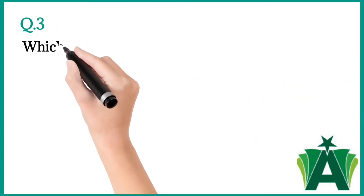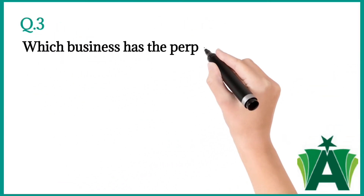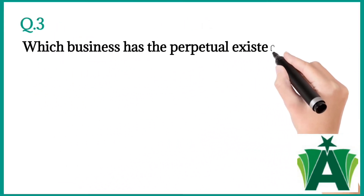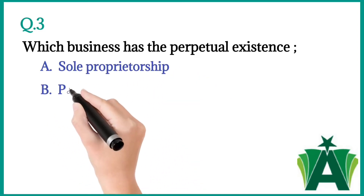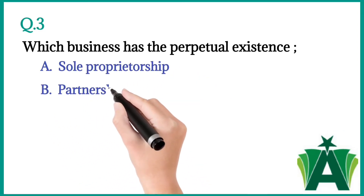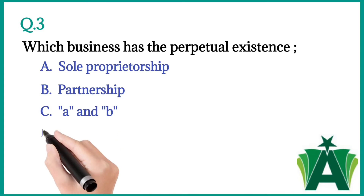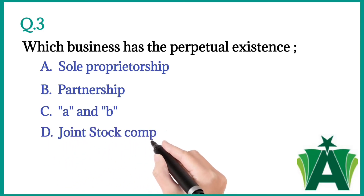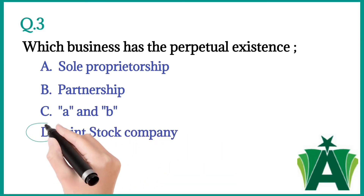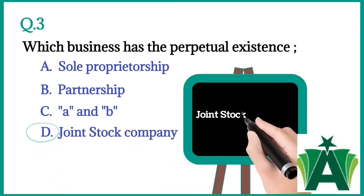Question number three: Which business has perpetual existence — a) Sole proprietorship, b) Partnership, c) A and B, d) Joint stock company. The correct answer is d) Joint stock company.